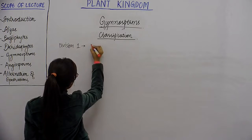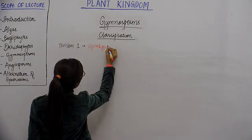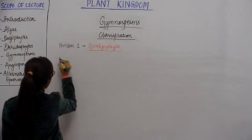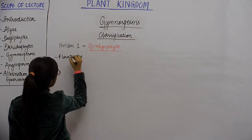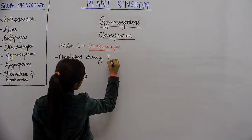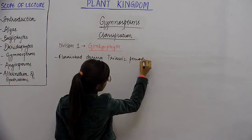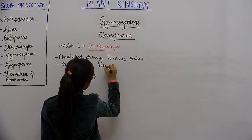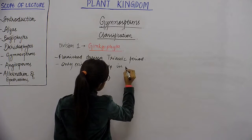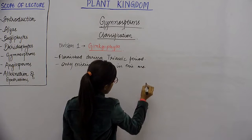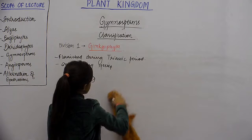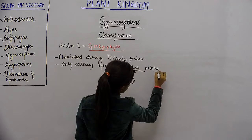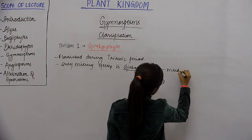Division 1 is Ginkgophyta. They flourished during the Triassic period. The only existing species in this division is Ginkgo biloba, which is commonly called the maidenhair tree.